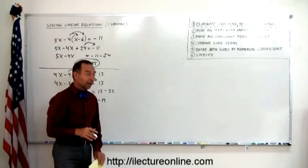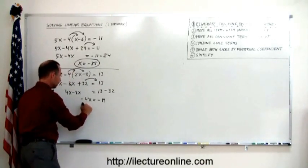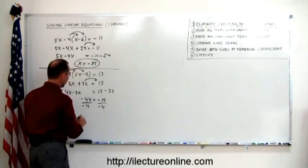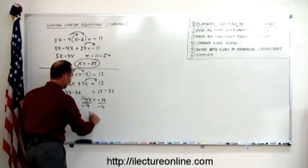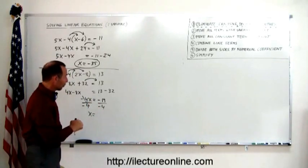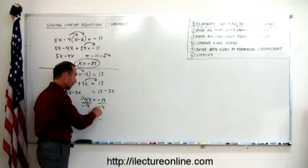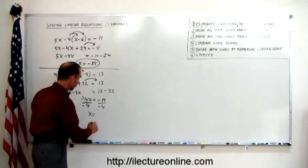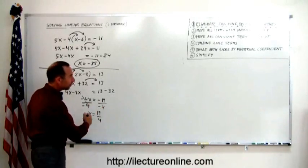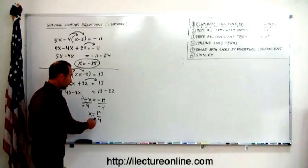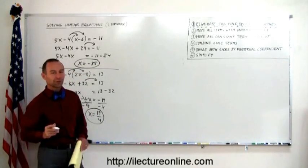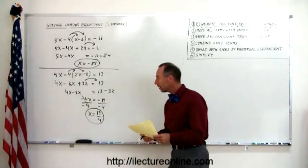So we combine like terms. The next step is divide both sides by the numerical coefficient right here. Minus 4. Divide the right side by minus 4. This cancels out. We have x equals, a minus divided by a minus. Remember, just like with multiplication, when we divide a negative number by negative number, we get a positive number. So this becomes a positive 19 over 4. And it doesn't look like we've simplified that any because 4 does not divide evenly into 19. So there's our answer for that problem.